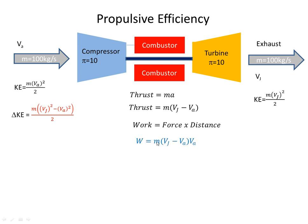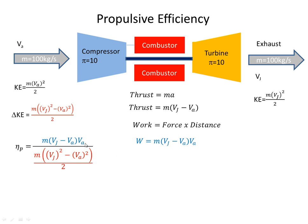So the thrust is m(Vj minus Va). If the aircraft is flying at 100 meters per second, or Va, then after one second it will have traveled 100 meters, so the distance is equal to Va. The propulsive efficiency then is looking at the work done on the aircraft over the change in kinetic energy — the work done on the aircraft is this equation, over the change in kinetic energy.